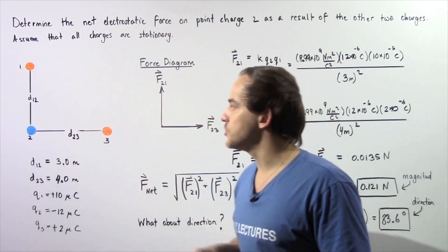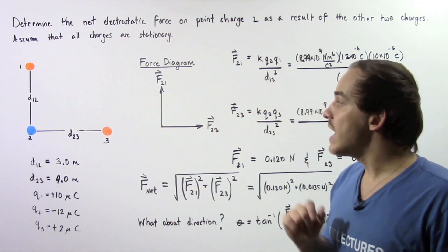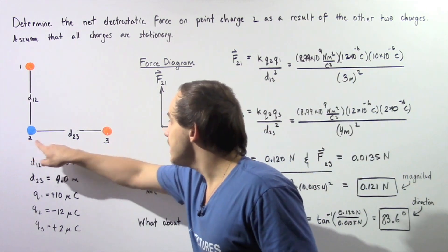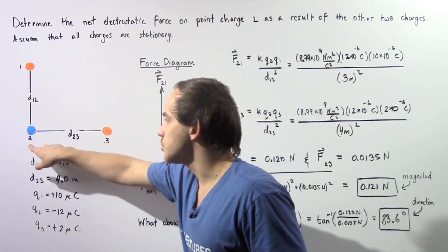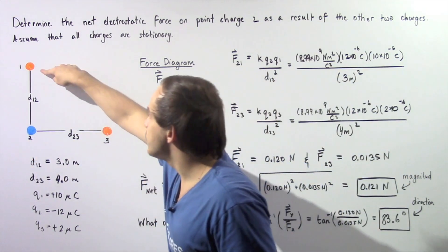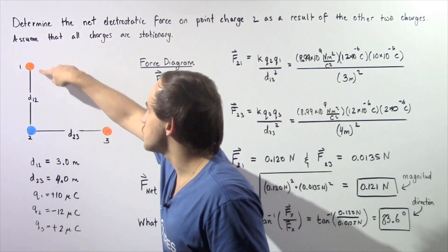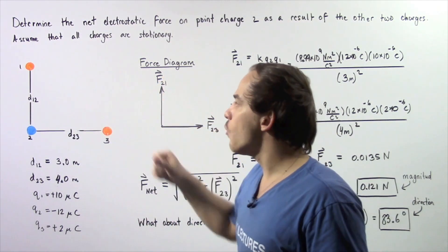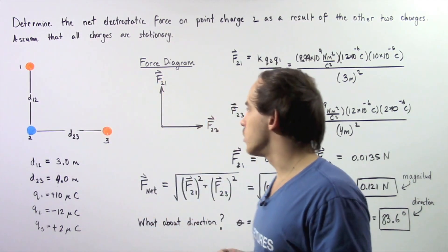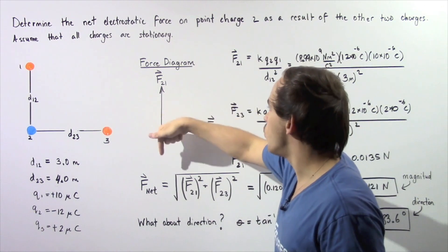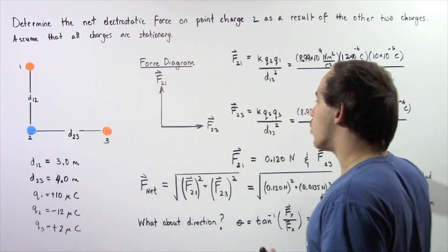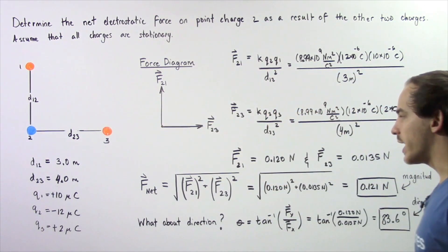Because these two pairs of charges are opposite in sign, the forces will be attractive. So we'll have one force pointing upward and one force pointing to the right.